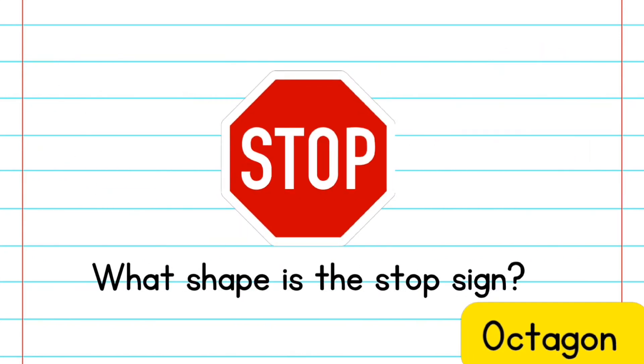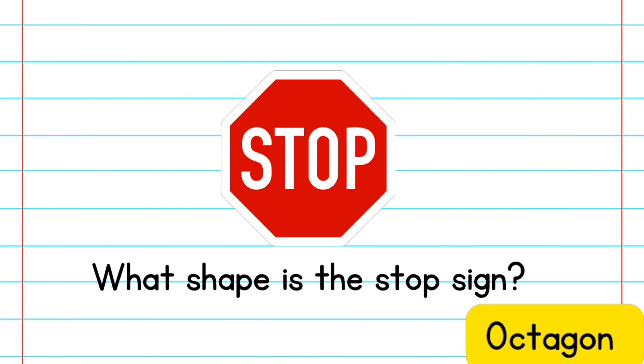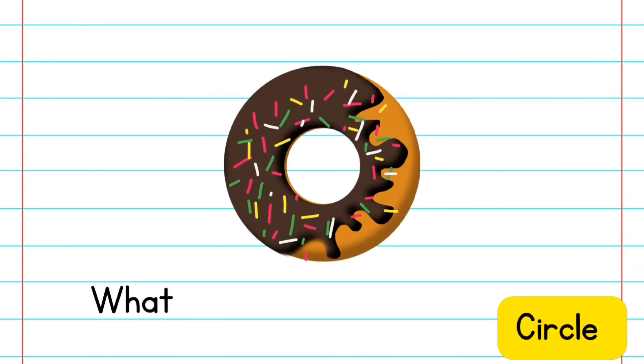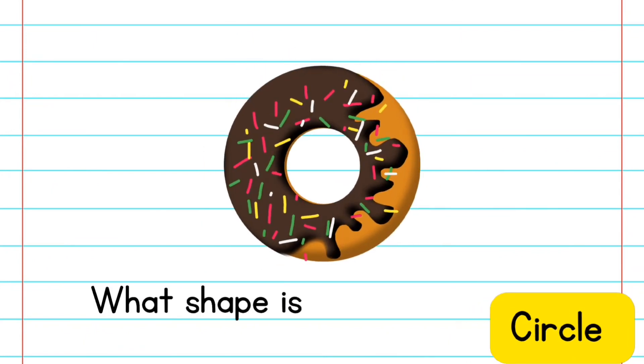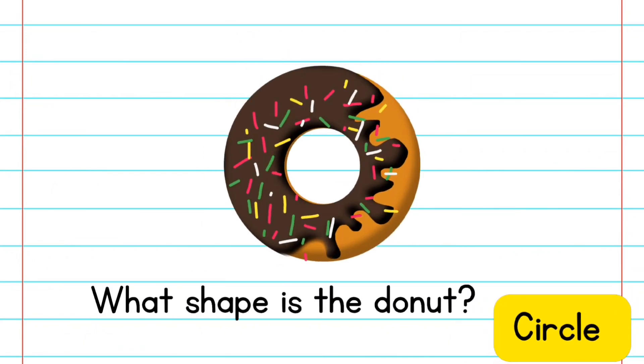What shape is this? This is an octagon. What shape is this? This is a circle.